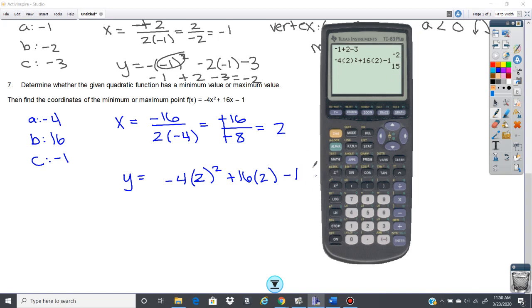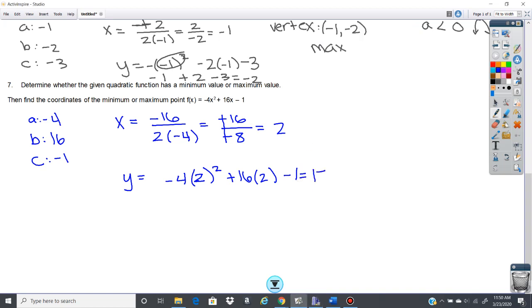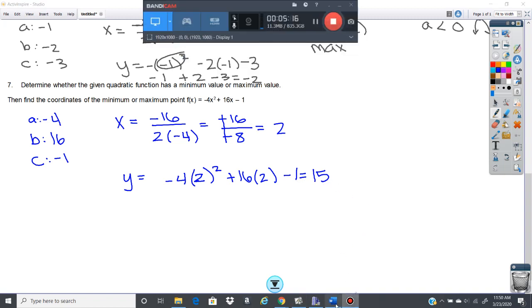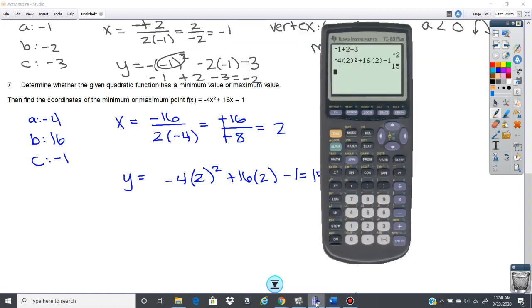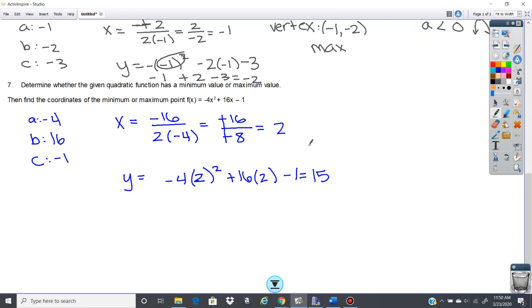So I've got a vertex of negative 2... oh, that's positive 2. Yeah. Negative 2 is from the other one. Okay, positive 2, 15. So my vertex.